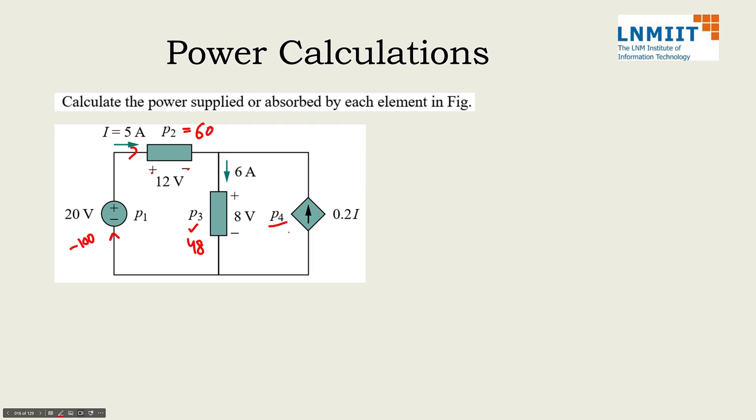Now the remaining thing is P4. How to get P4? One thing that we know is algebraic sum of all the power should be 0. So right now we have minus 100 and plus 108. That means this has to be minus 8. Or otherwise we can compute that the voltage drop here will be equal to the voltage drop here. Since the voltage will be plus minus this way and the current is entering from minus, that means product will come out to be negative.